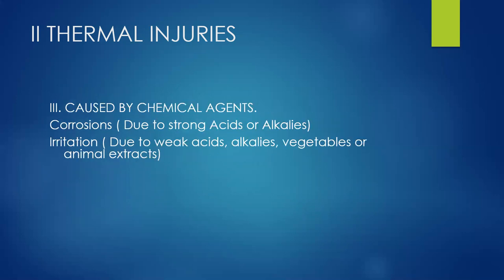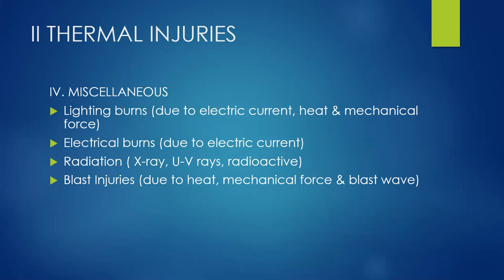Thermal injuries can also be caused by chemical agents — corrosion is due to strong acids or alkalis, while irritation is due to weak acids, weak alkalis, or vegetable or animal extracts. Miscellaneous thermal injuries include lightning burns due to electric current, heat and mechanical force; electrical burns due to electrical current; radiation burns from X-rays, ultraviolet rays, or radioactive substances; and blast injuries caused by heat, mechanical force, and blast wave.